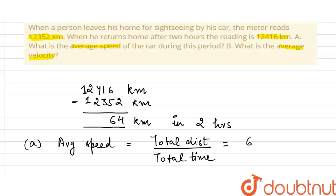So the total distance is 64 kilometers and the total time is two hours. So the average speed comes out to be 32 kilometers per hour.